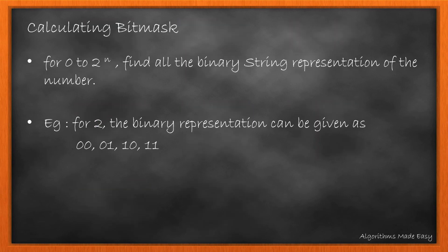To find the bitmask, we will loop through 0 to 2^n and find the binary representation for the number, while excluding all the leading 0s except that for the length n. So for 2, the binary representation is as follows.